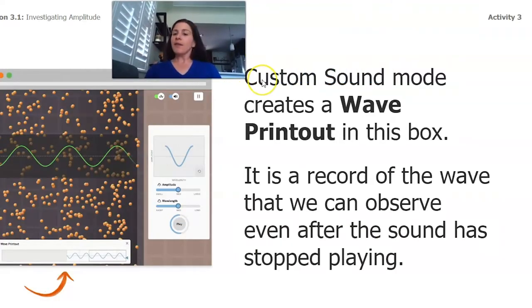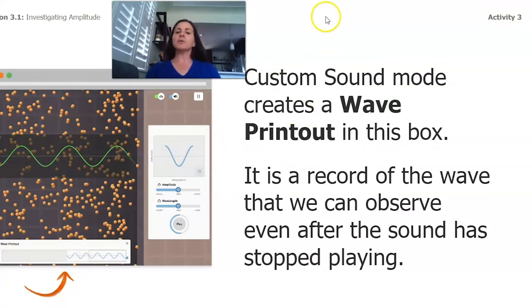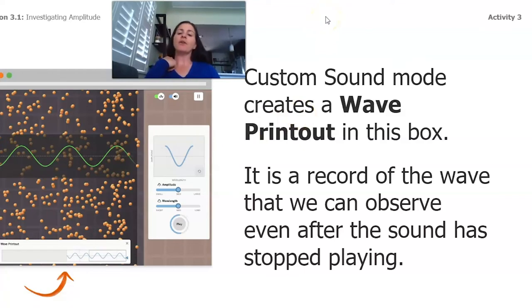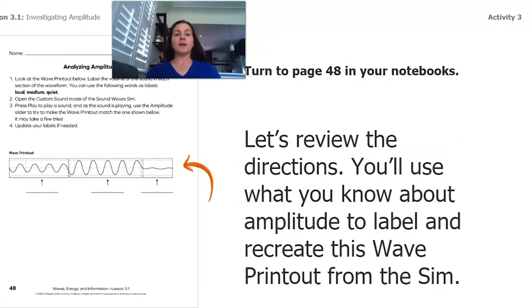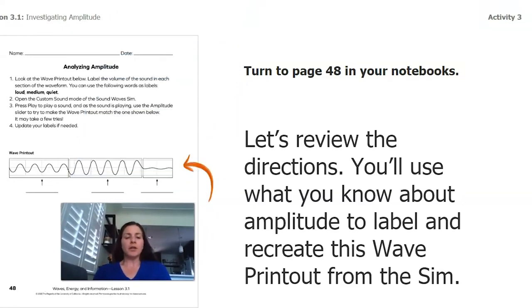Now, we were in that custom sound mode, and you might have noticed at the bottom of the box there was what was called a wave printout, and that was a record of the wave that we could observe even after the sound stopped playing. Now, if you have your notebook, go to page 48. If you don't, that's okay. You can look at mine and just jot down your answers on a piece of paper. So let's look at the directions. You're going to use what you know about amplitude, that how big or how loud a wave is, to label and recreate this wave printout from the sim.